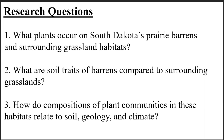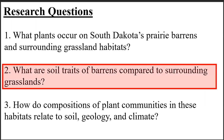Now there are three main questions this project aims to answer. Firstly, what plants occur on South Dakota prairie barrens and surrounding grassland habitats? Secondly, what are the physical and chemical properties of prairie barren soils relative to surrounding grassland habitats? Thirdly, how are compositions of plant communities in these habitats related to soil traits and other parameters like geology and climate? Because my role in the project was more chemistry oriented, this presentation will focus on answering question two: quantifying the characteristics of soils in prairie barrens and determining how they compare to the characteristics of soils in the surrounding prairies.